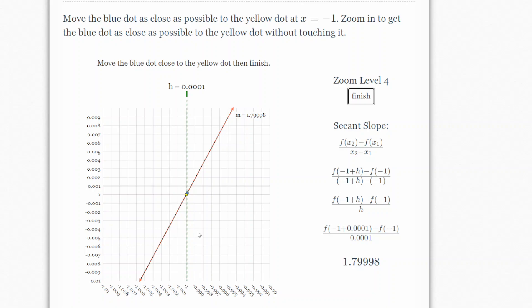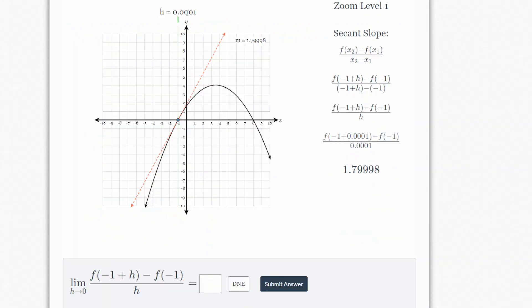Then it will say the limit as h approaches zero. What that means is that the distance between the yellow point and the blue point are essentially almost zero. And that it's f of this negative one plus h. So saying it's the y2 minus y1 over x2 minus x1, which is this distance.